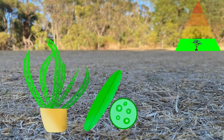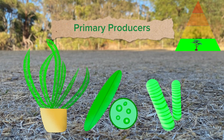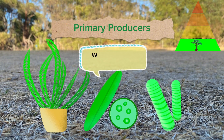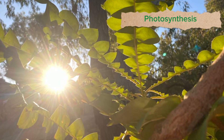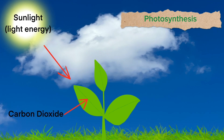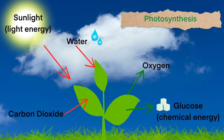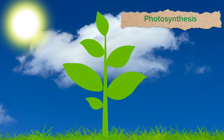Plants, algae and cyanobacteria are called primary producers. They make or produce their own food through a process called photosynthesis. Light energy is captured from the sun and is used to convert carbon dioxide and water into oxygen and glucose. This provides the producer with energy to help it grow.